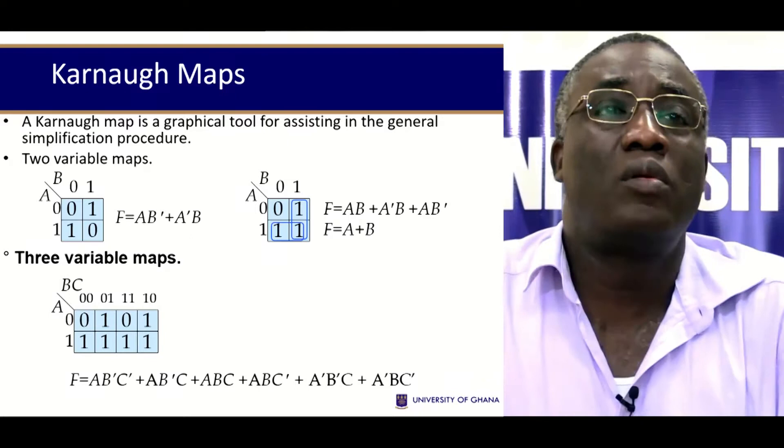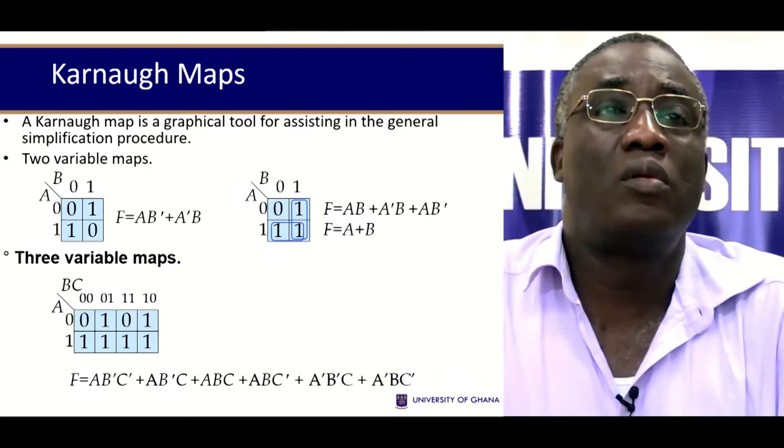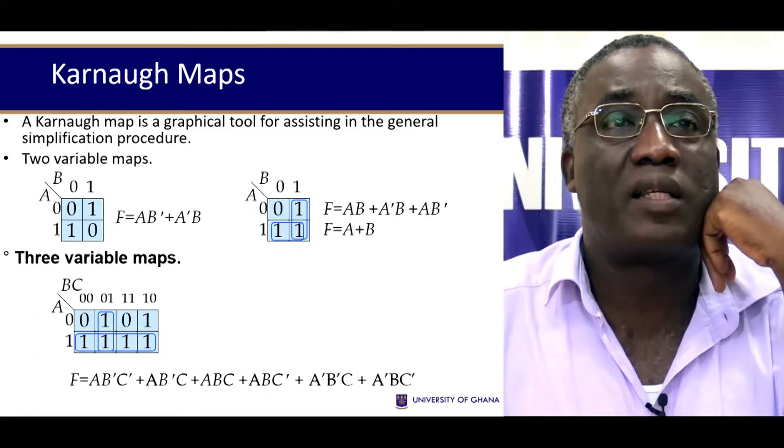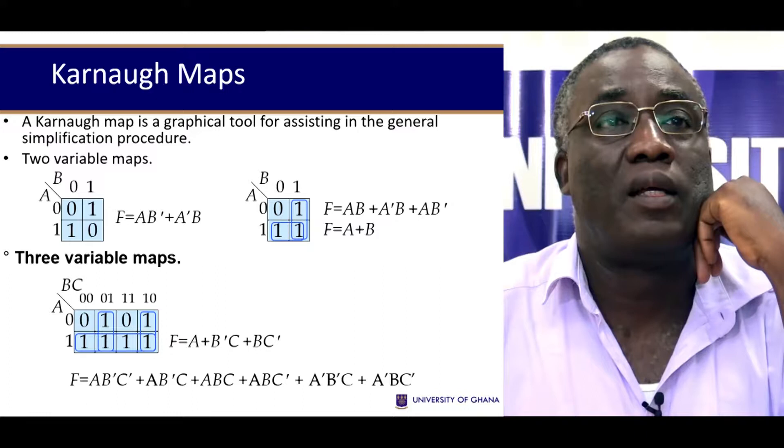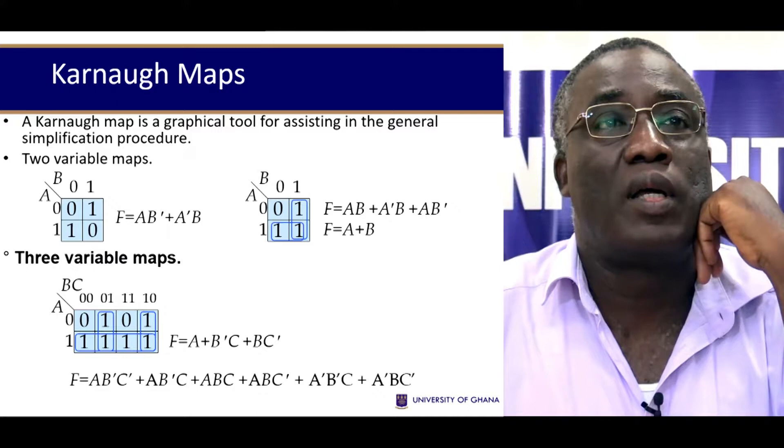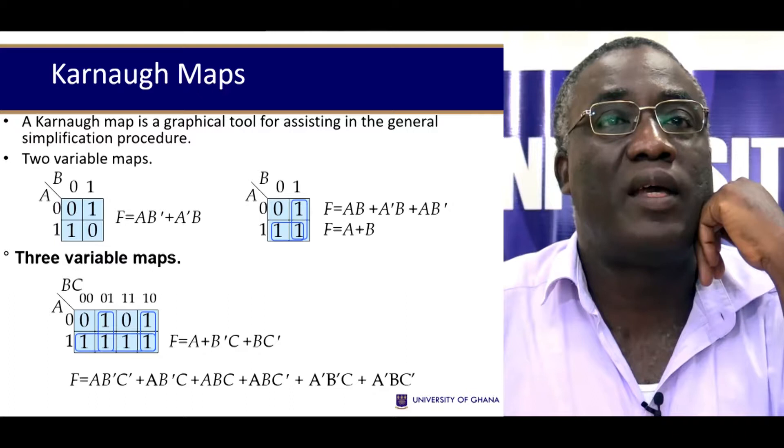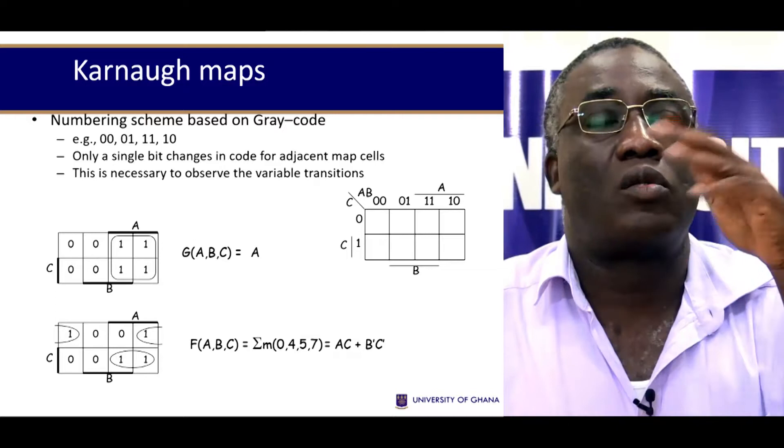So for the three variables, let's see how we can group them. We say you can take the largest possible ones. So you take that, and then you can also group that, and then you can group this. So when you do that, this one gives you an A. That one gives you not B, C. And then this one here gives you B, not C.